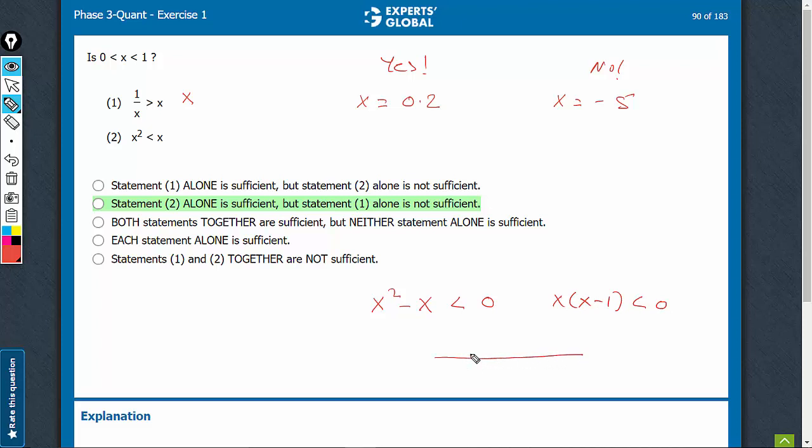Plot it on the number line. I hope you have seen the relevant video where I have taught doing this. The two nodes are 0 when x is equal to 0 and 1 when x minus 1 is equal to 0. The rightmost value is positive and then alternate negative and positive. We need negative values and therefore, x has to be between 0 and 1 and therefore, statement 2 leads to yes as an answer. Statement 2 is sufficient.